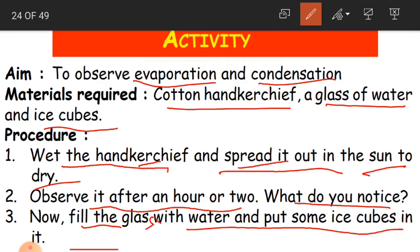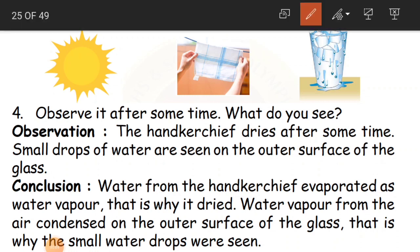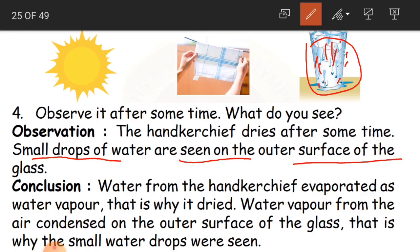Step two: fill a glass with water and put some ice cubes in it. After some time, observe the outer surface of the glass. You will see some water droplets on the outer surface of the glass. Small drops of water are seen on the outer surface.